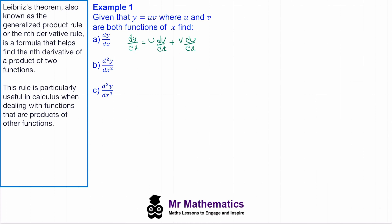Now we need to find the second derivative. So d²y/dx² — we differentiate this product. We get u·(d²v/dx²) plus (dv/dx)·(du/dx). And if we look at the second pair, we'll apply the product rule again. So now we've got plus v·(d²u/dx²) plus (dv/dx)·(du/dx). And we can simplify this by collecting like product pairs.